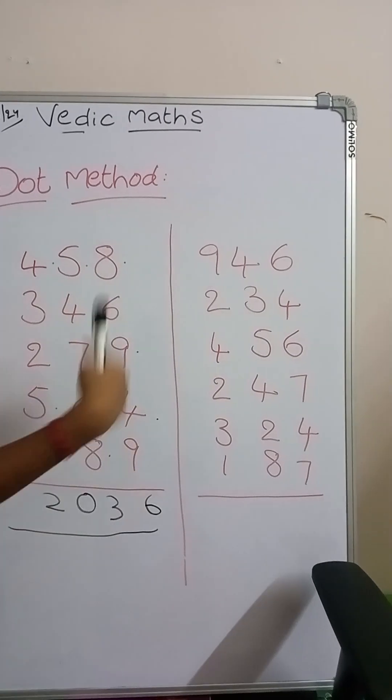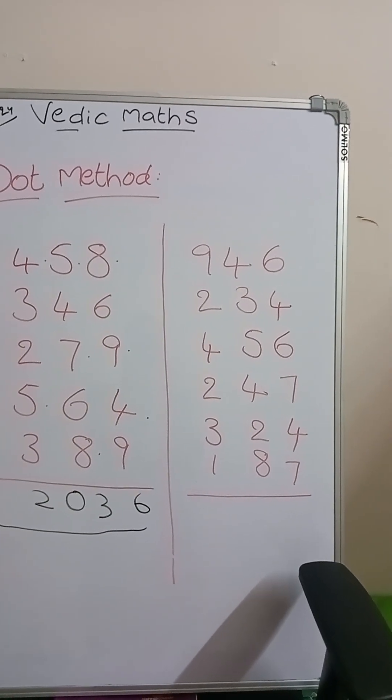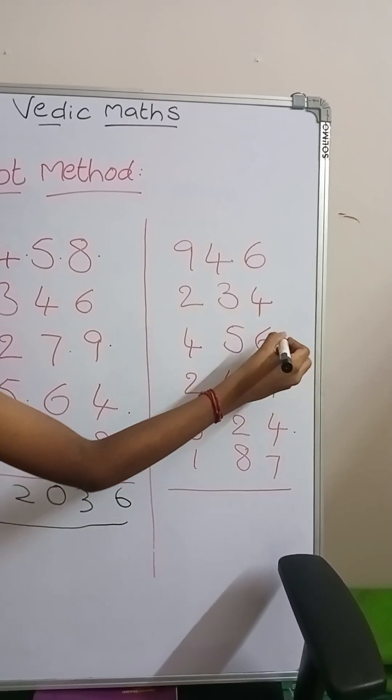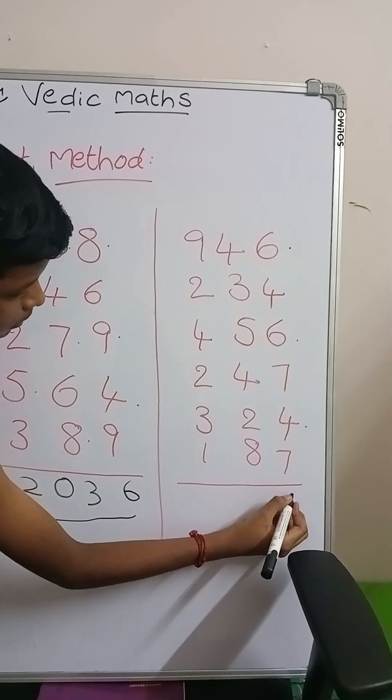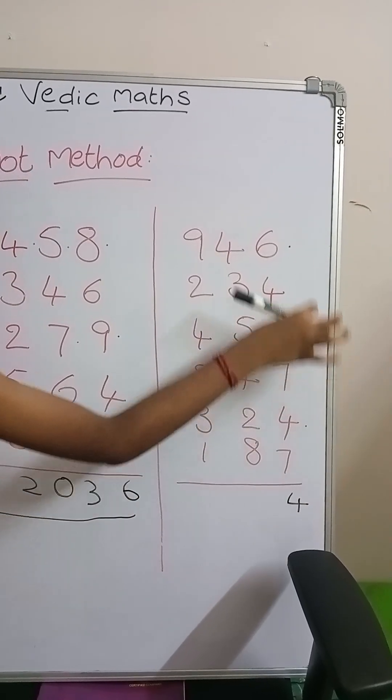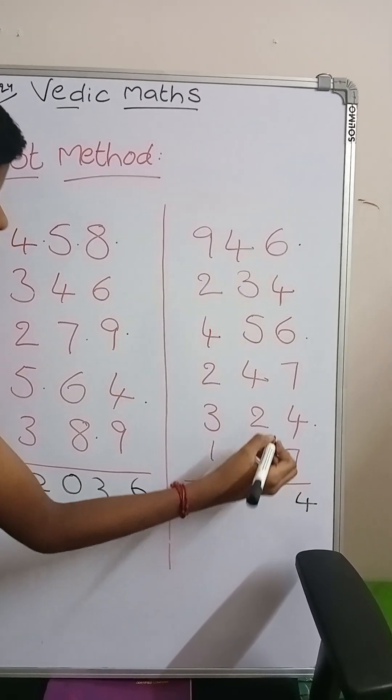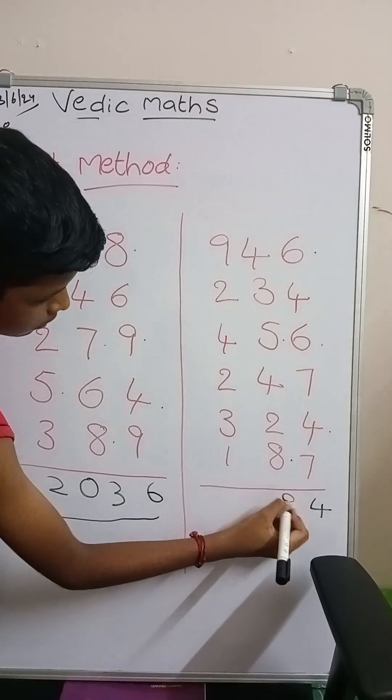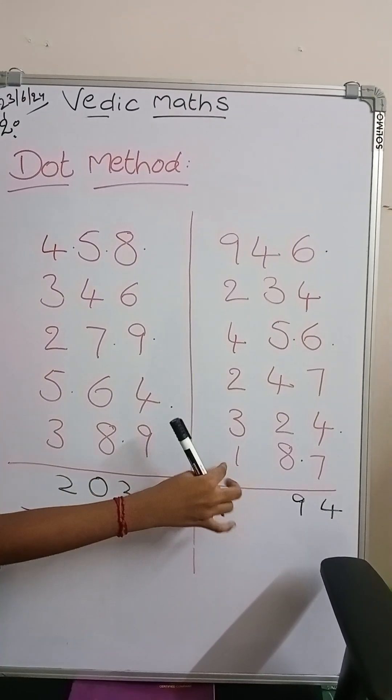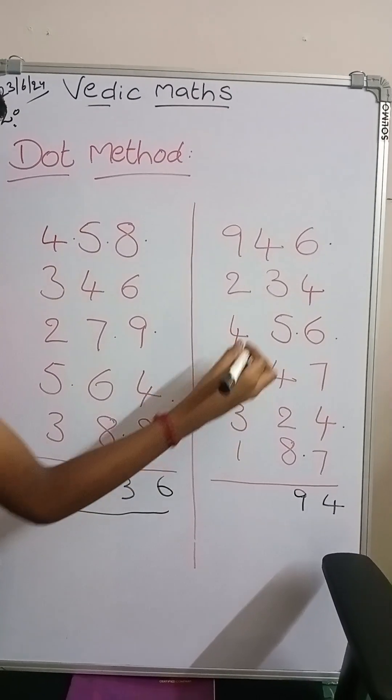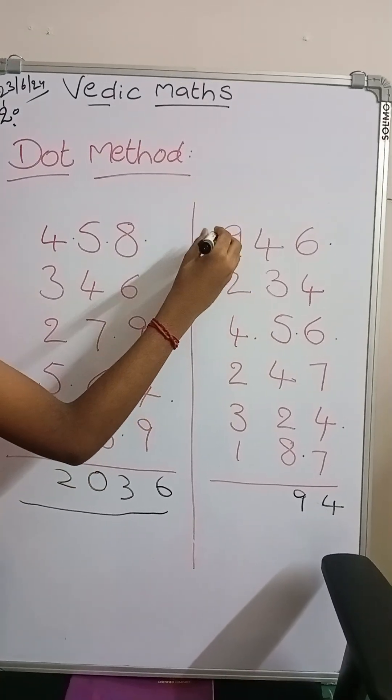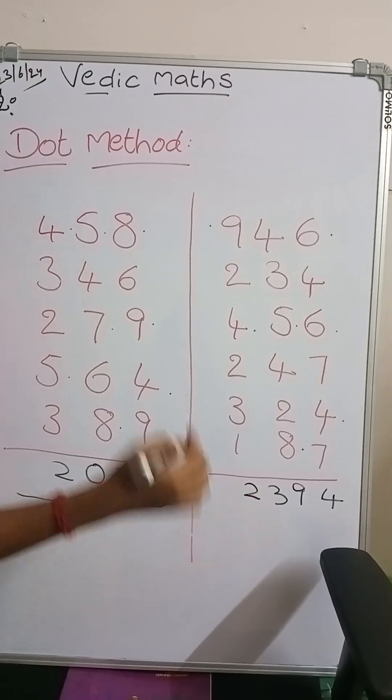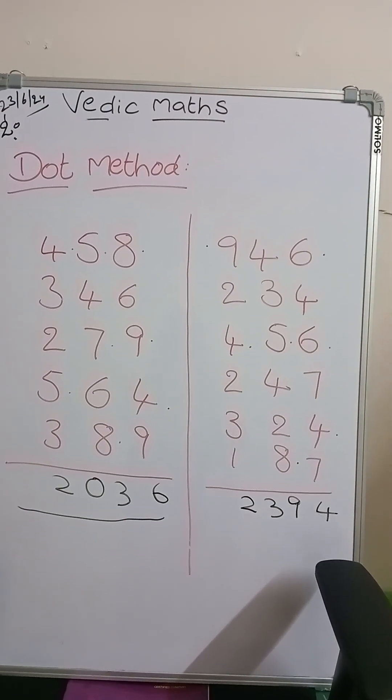In the same way, we will do the next problem. But we will do everything in our mind. This improves our concentration. So here the answer is 2394. And we did everything in our mind.